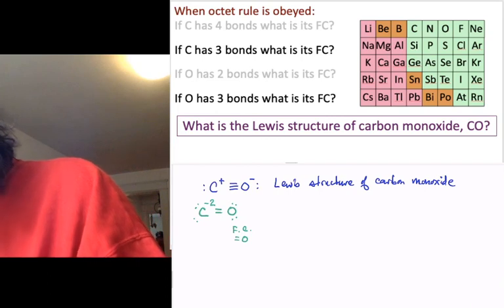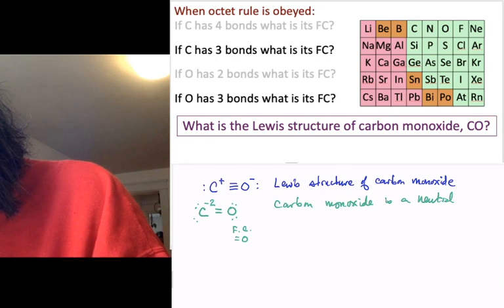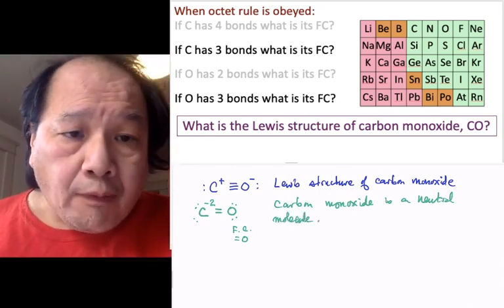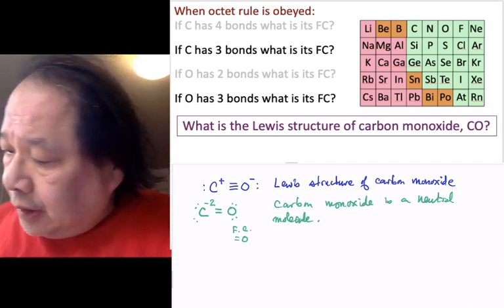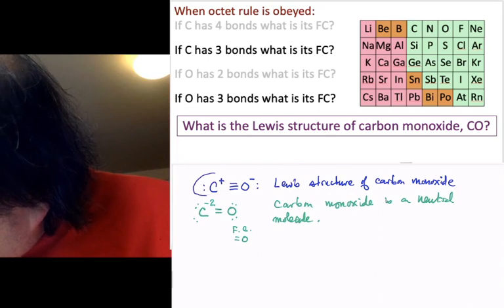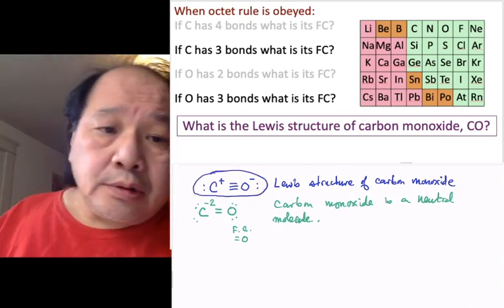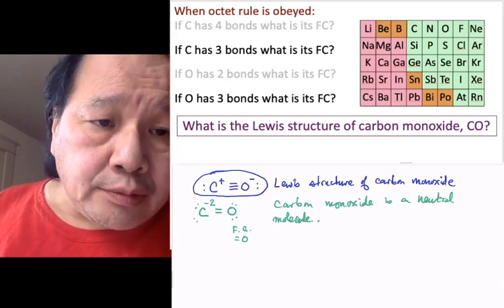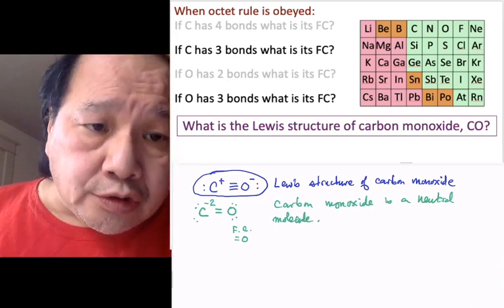Because carbon monoxide is a neutral molecule. A neutral molecule has what charge? Zero. In this blue structure, if I sum all my formal charges, it adds up to a plus and minus, it adds up to zero, which is the actual charge of the system.